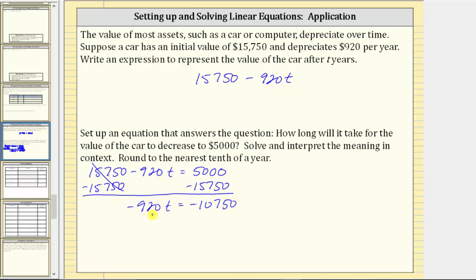Now that we've isolated the variable term on one side of the equation, the next step is to multiply or divide to isolate the variable and solve the equation. And because negative $920t means negative $920 times t, to undo the multiplication and solve for t, we divide both sides by negative $920. Simplifying, negative $920 divided by negative $920 is equal to one. One times t is t. We have t equals this quotient, which we are asked to round to the nearest tenth.